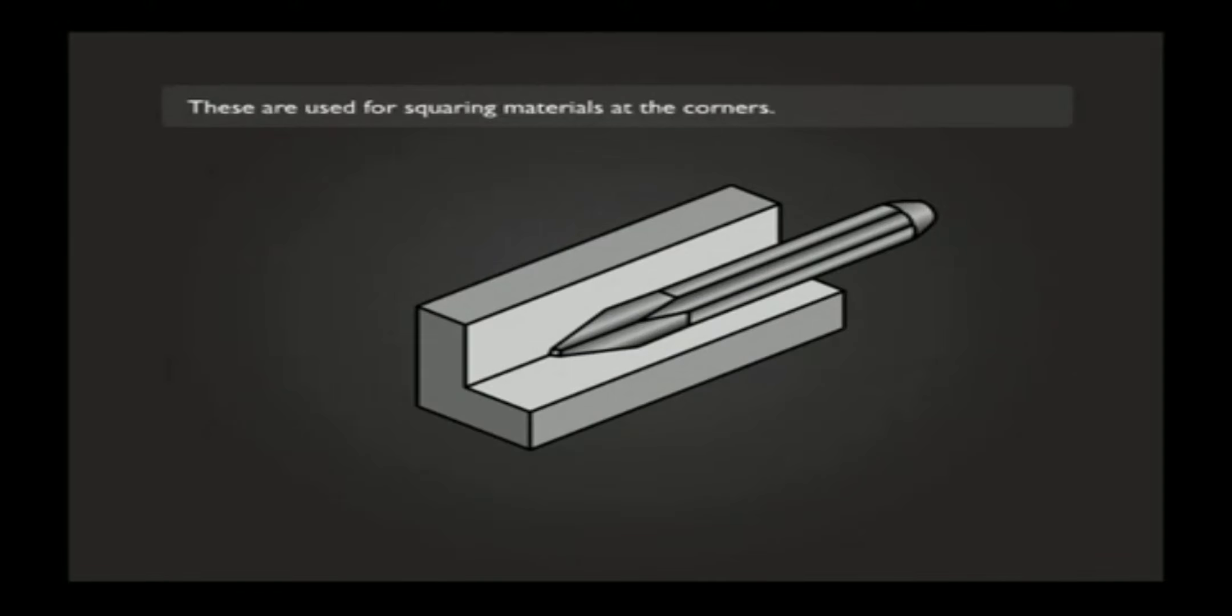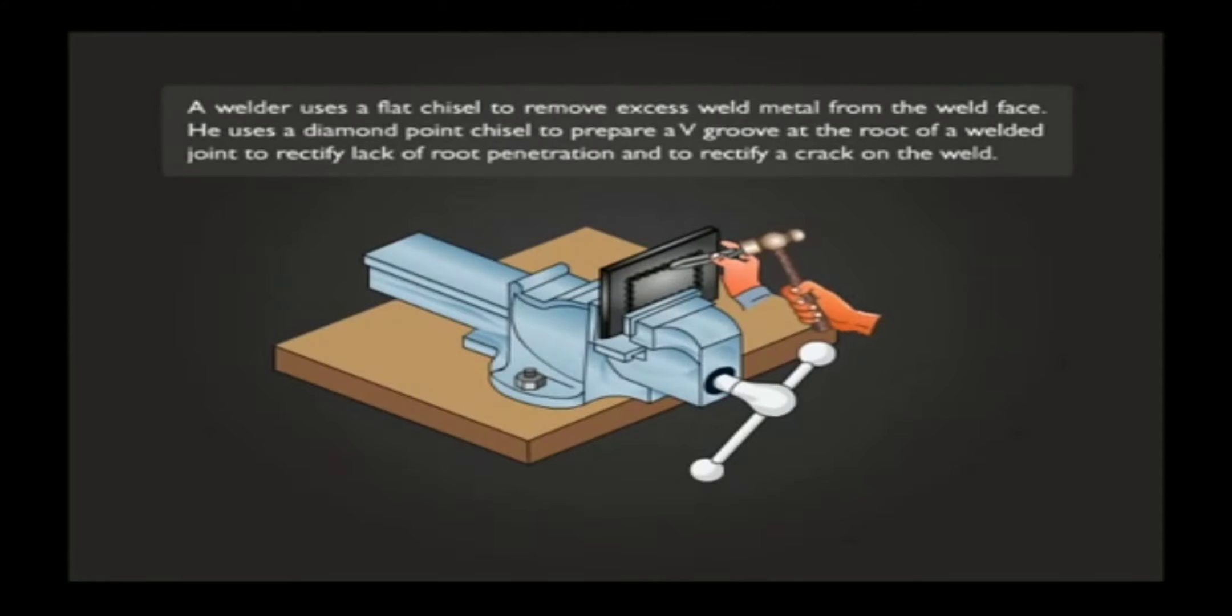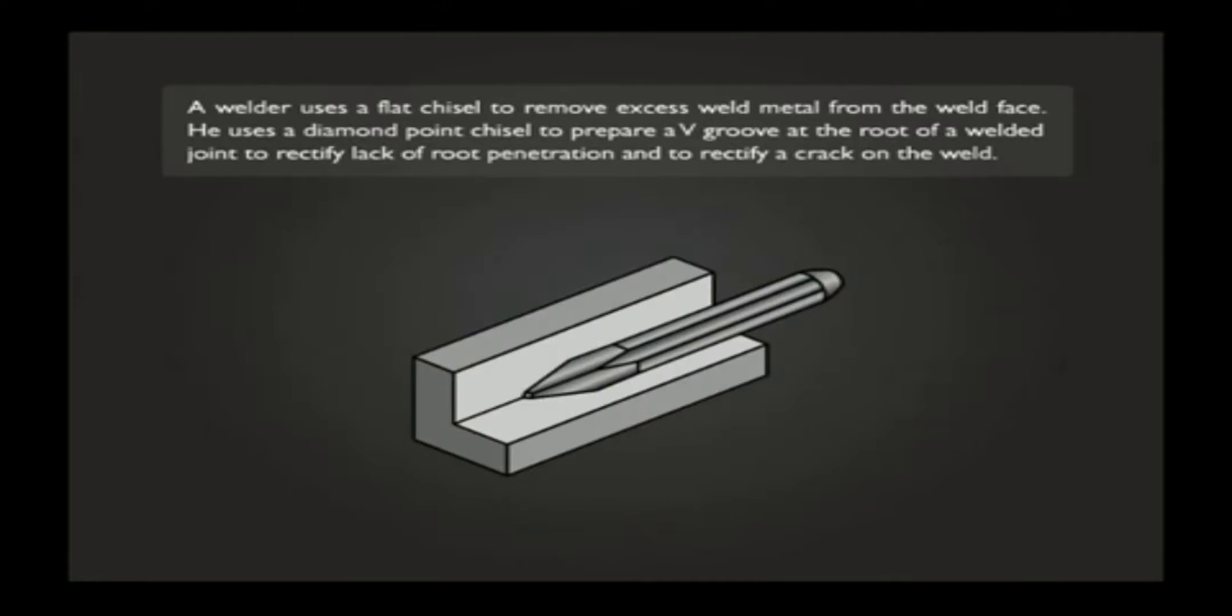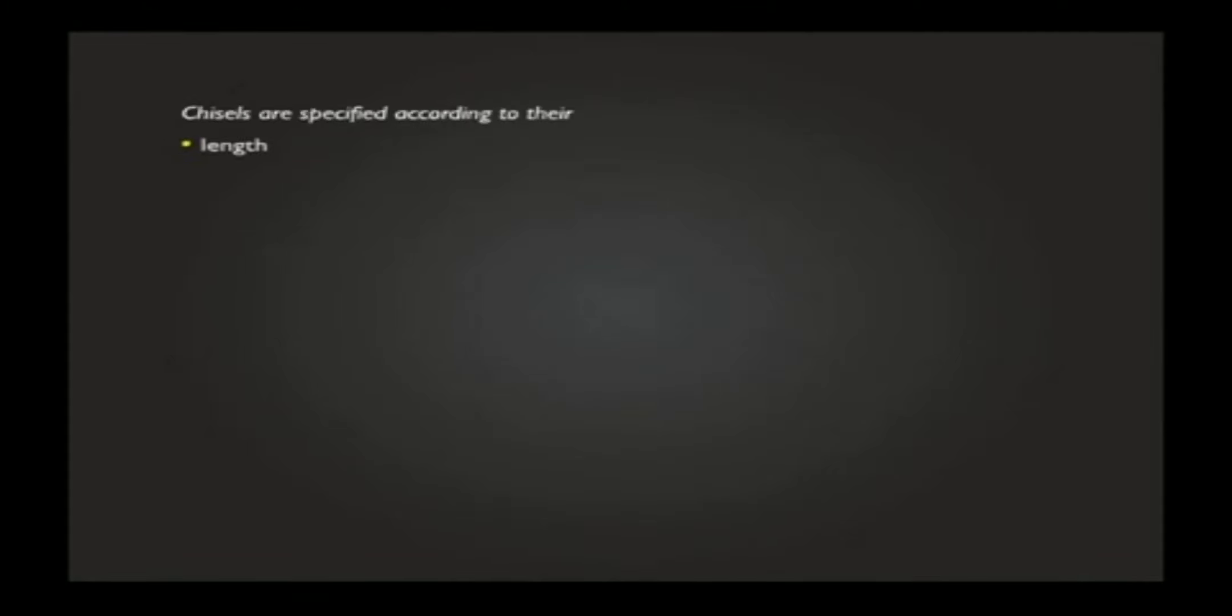Diamond point chisels are used for squaring materials at the corners. A welder uses a flat chisel to remove excess weld metal from the weld face. He uses a diamond point chisel to prepare a V-groove at the root of a welded joint, to rectify lack of root penetration and to rectify a crack on the weld.